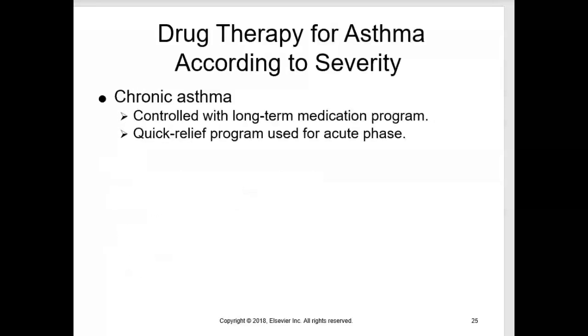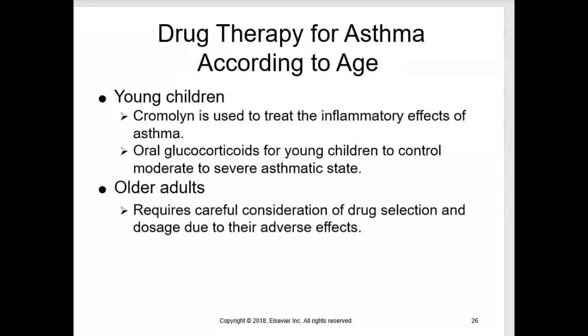Chronic asthma may be controlled through a long-term medical treatment program and by a quick relief program during an acute phase. The patient will have daily medications to control their asthma, but will also have emergency rapid-acting drugs that they can use for acute asthma attacks.